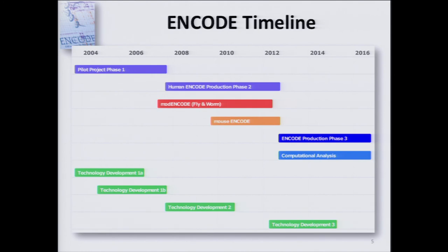The timeline of ENCODE: the project began in approximately 2003, starting off looking at 1 percent of the human genome. Looking back, it was bold and audacious to tackle even 1 percent. By 2007, the project was looking at essentially the entire human genome, and the sister project Mod ENCODE was looking at the worm and fly genomes. By 2009 there was a mouse project, and the current round of ENCODE, which started in 2012, looks at the human and mouse genomes.